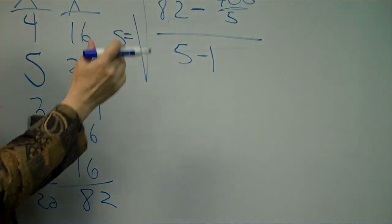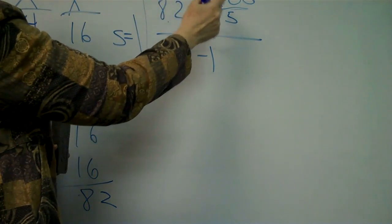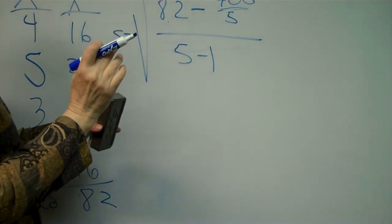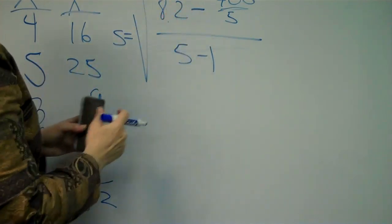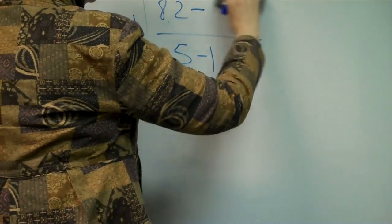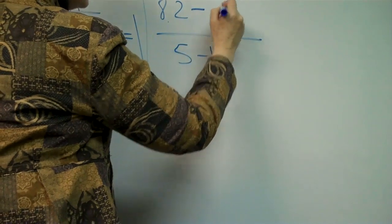So the next order of operation that we have to do is divide 400 by 5. Always multiply and divide before you subtract or add. So that would equal 80.